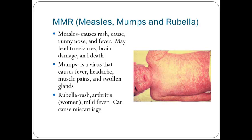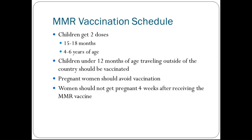MMR is for measles, mumps, and rubella. Measles causes rash, runny nose, and fever, and may lead to seizures, brain damage, and death. Mumps is a virus that causes fever, headache, muscle pains, and swollen glands. Rubella causes rash and arthritis in women; it can cause miscarriages among pregnant people. It is important that all pregnant women get a rubella titer with their first pregnancy. Children get two doses between the ages of 15 and 18 months and then at school age, which is 4 to 6 years. Children under 12 months traveling outside the country should be vaccinated. Pregnant women should avoid vaccination, and women should not get pregnant for four weeks after receiving the MMR vaccine.